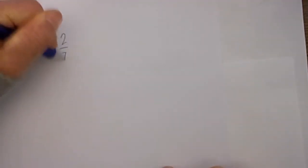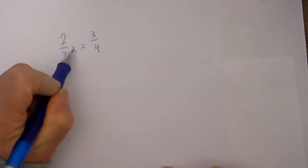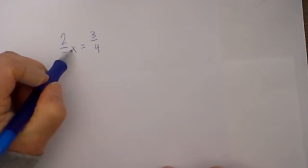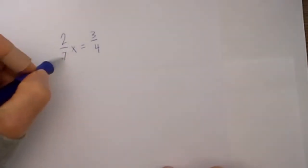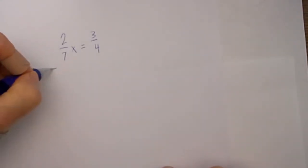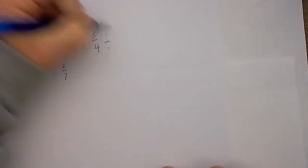Say we have 2/7x is equal to 3/4. We need to isolate the variable. In order to isolate the variable we can divide by 2/7. We will divide 2/7 by 2/7. We know that whatever we do on one side of the equation we must do to the other side.